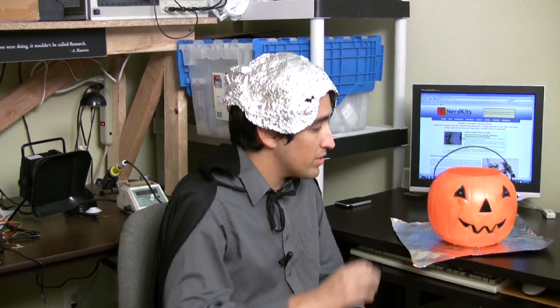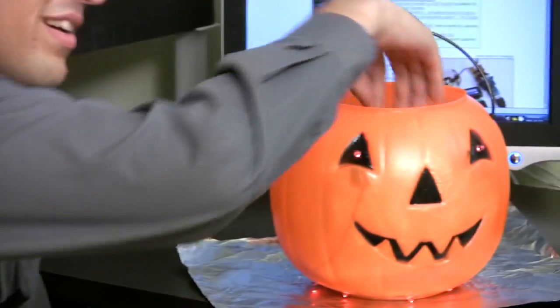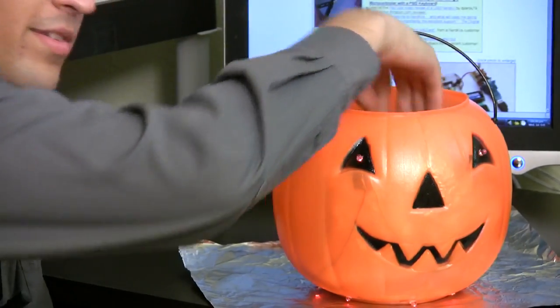In this project, we are going to show you how you can use a NerdKit, some tin foil, and a little bit of electronics knowledge to create a proximity sensor. We will then apply that knowledge to this spooky candy bowl that adds an element of trick when kids reach inside for their treat.